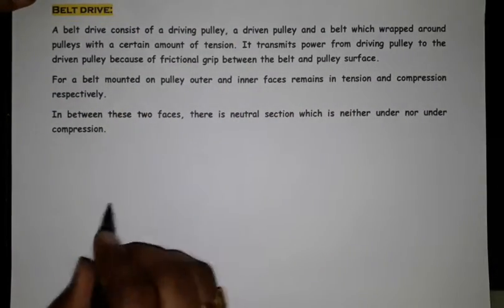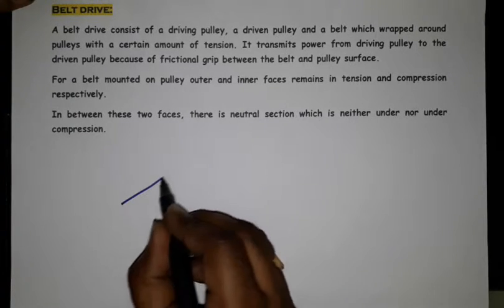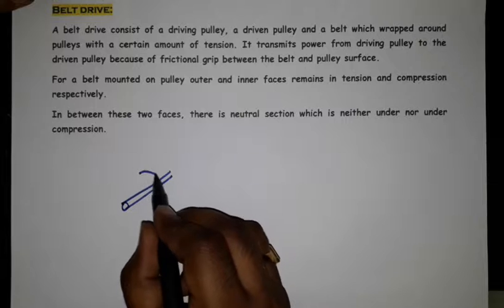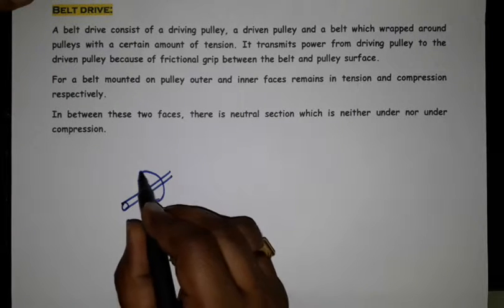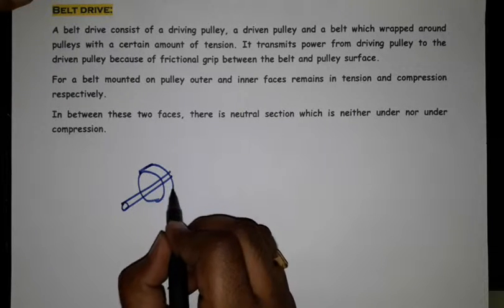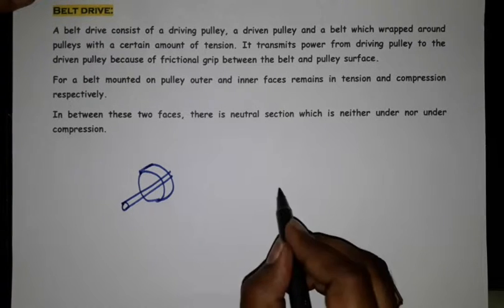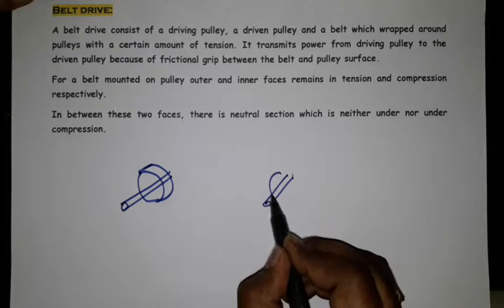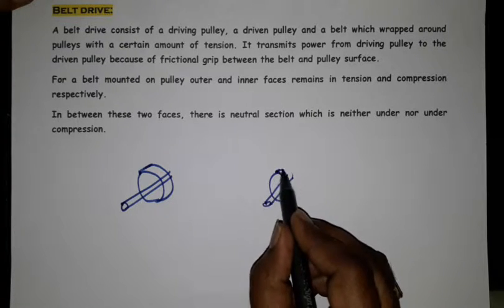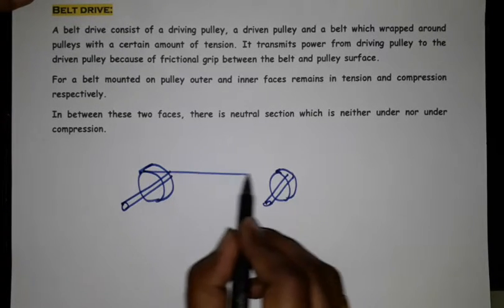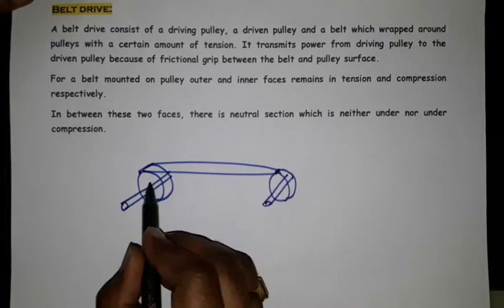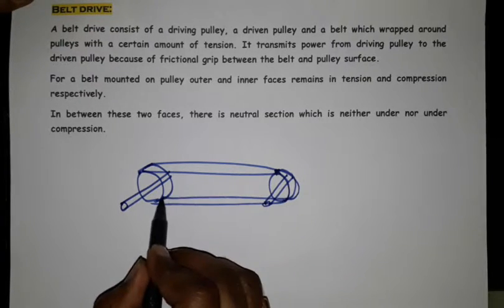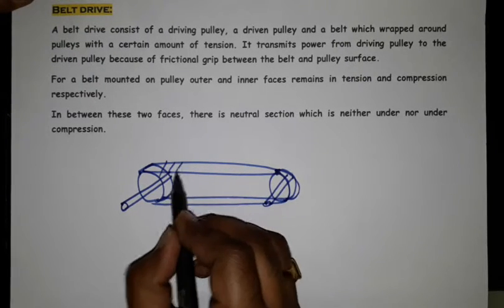It transmits the power from the driving pulley to the driven pulley because of the frictional grip between the belt and pulley surface. For example, we have one shaft with a mounted pulley and another shaft. We connect both with the belt drive. This is the wrap. This is your belt.